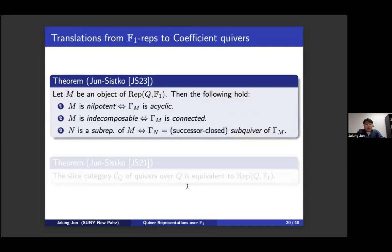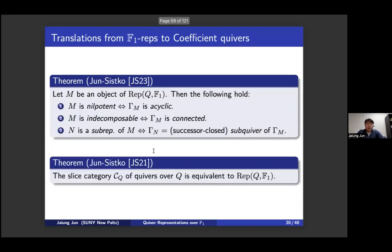One can translate properties of F1 representations directly into coefficient quivers — everything becomes combinatorics. A representation being nilpotent is equivalent to the coefficient quiver being acyclic. A representation being indecomposable is equivalent to the coefficient quiver being connected. Any sub-representation corresponds to a successor-closed sub-quiver of the coefficient quiver. Under this correspondence, the category of F1 representations is equivalent to the category of quivers over Q.